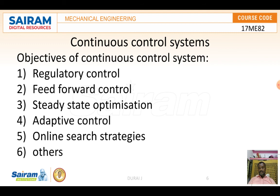The objectives of a continuous control system include regulatory control, feedforward control, steady-state optimization, adaptive control, online search strategies, and others. Thank you.